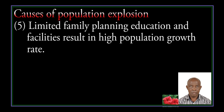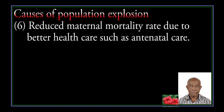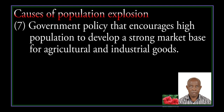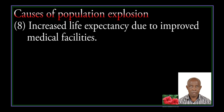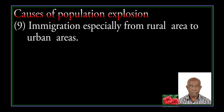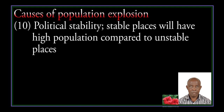Limited family planning education and facilities result in a high population growth rate. Reduced maternal mortality rate due to better health care. Government policy that encourages high population to develop a strong market base for agriculture and industrial goods. Increased life expectancy due to improved medical facilities. Immigration, especially from rural areas to urban areas. Stable places will have high population compared to unstable places.